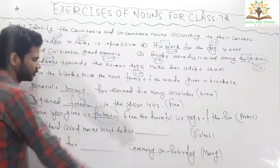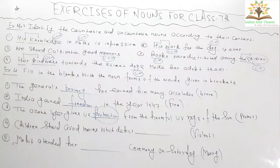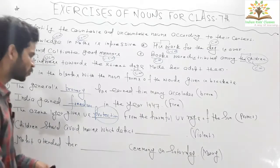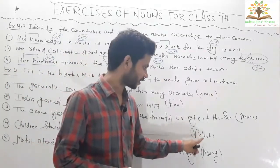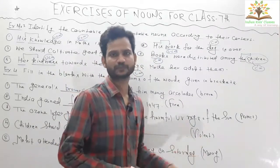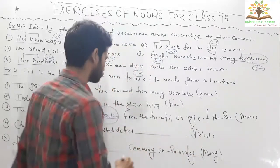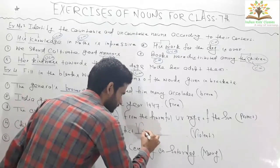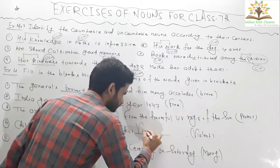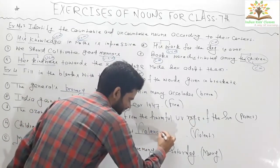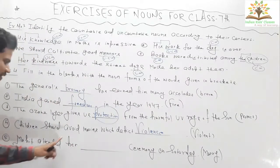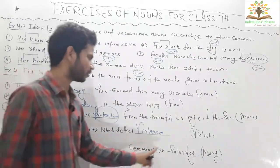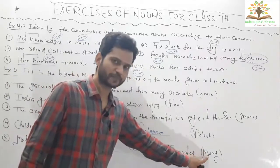Question four: 'Children should avoid movies which depict ___.' Violent is given here as an adjective. Through the adjective violent we can make the noun violence. So the answer is violence.